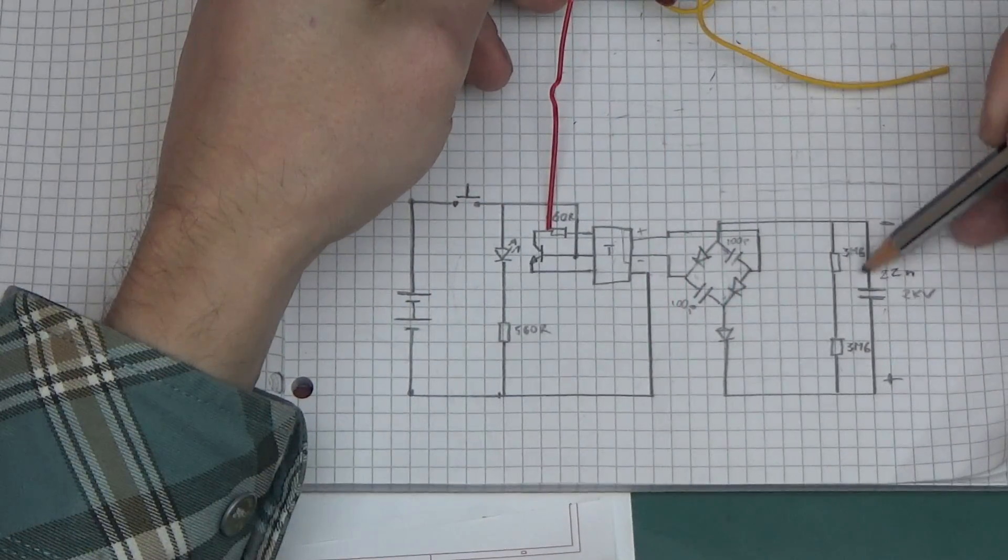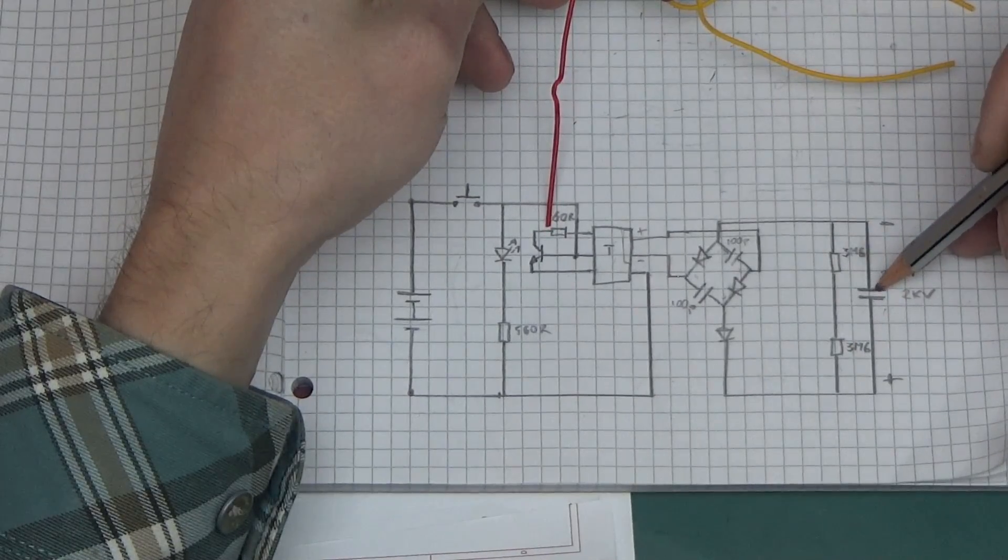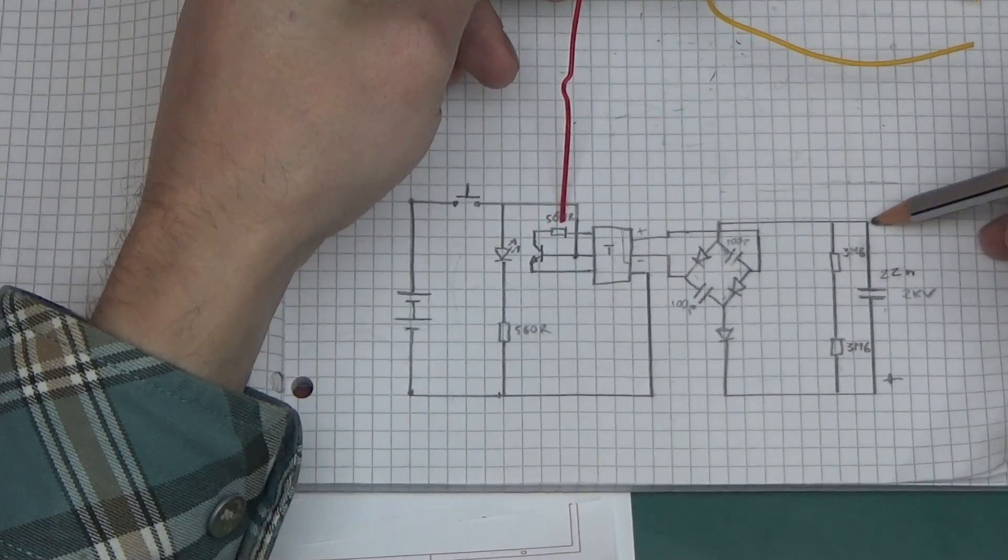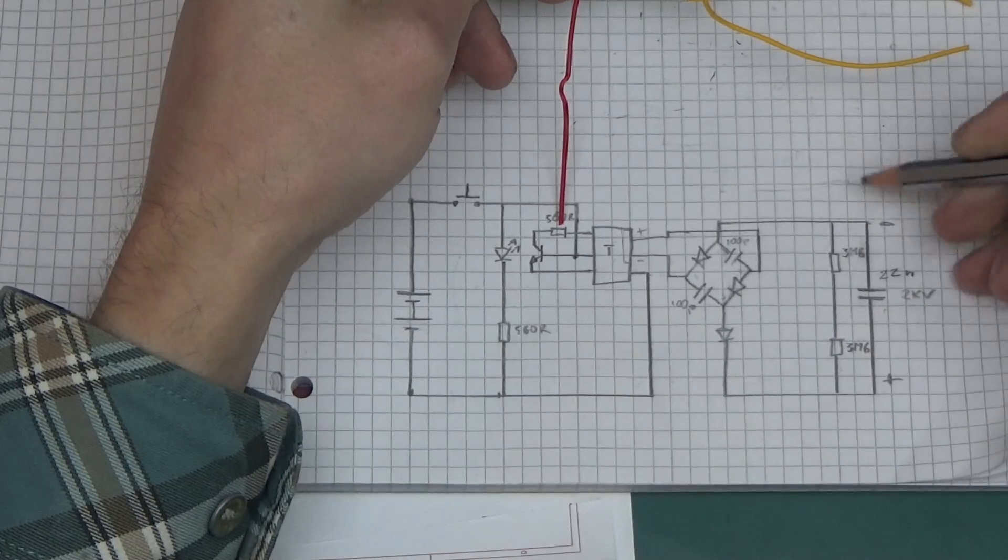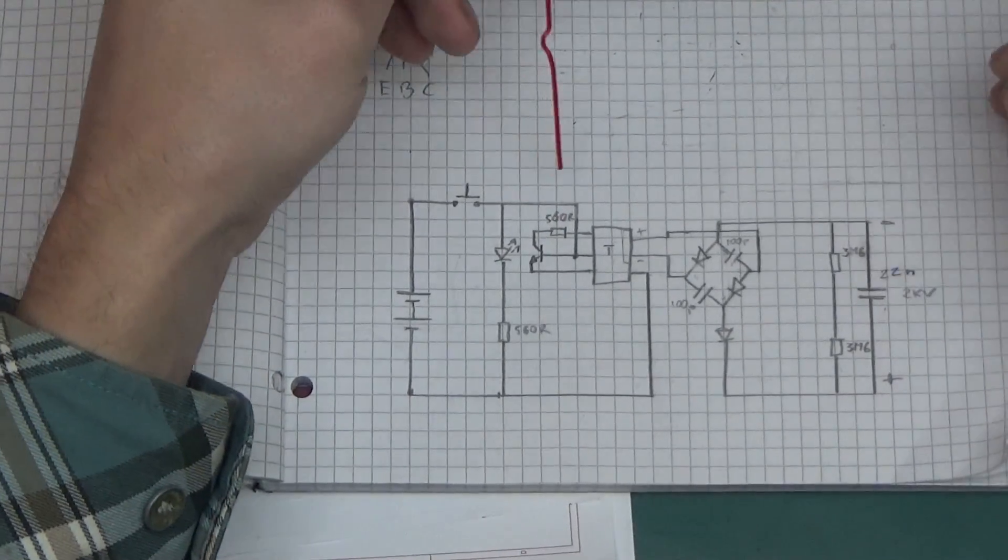Then we've got another diode, two 3.6 meg resistors and another capacitor. This is the high voltage DC negative output and this is the positive. I should have drawn it the other way around.